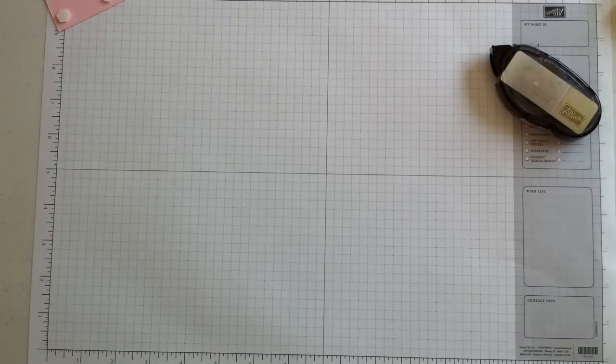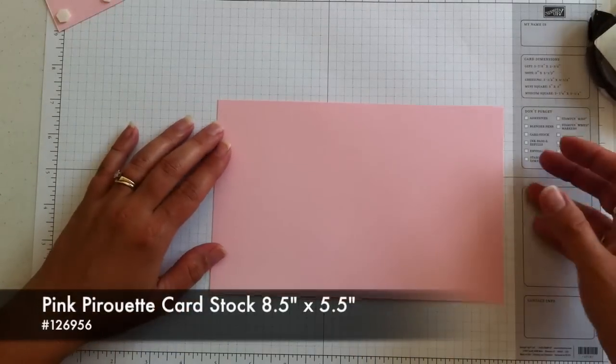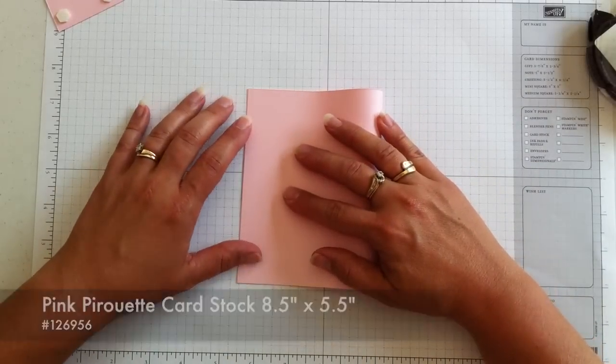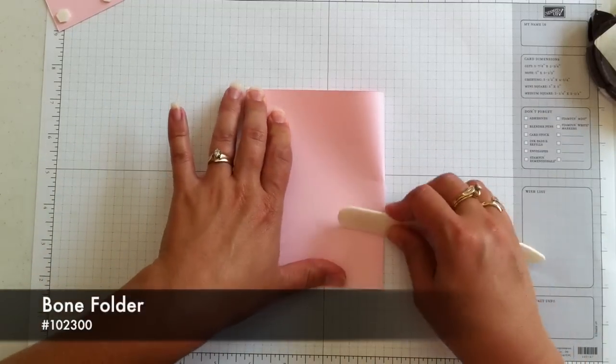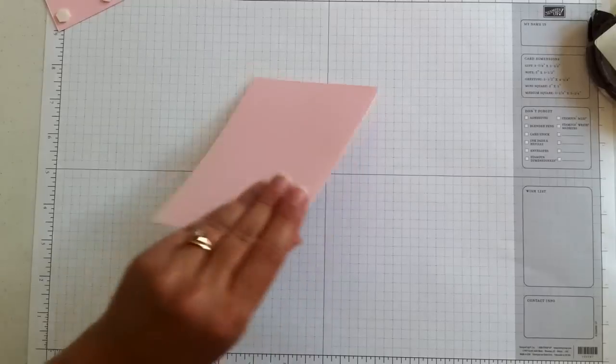The base of the card today is also pink pirouette. It's 8 1⁄2 inches by 5 1⁄2. And I just line up the edges, the corners, use the bone folder to get a good crisp fold.